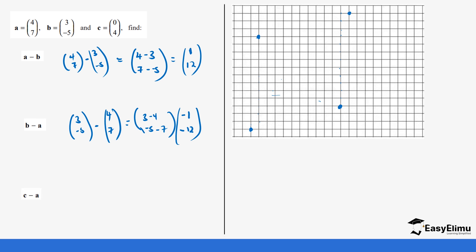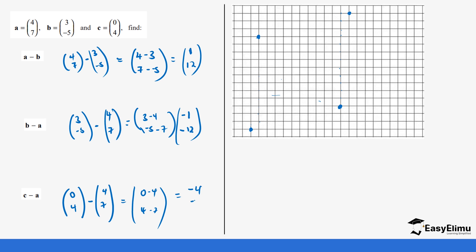Finally, we have c minus a. Our c equals (0, 4) and our a is (4, 7). Doing the subtraction gives us zero minus four, and four minus seven. Zero minus four is minus four, and four minus seven is minus three. So we are moving four units on the x-axis in the negative direction and three units on the y-axis also in the negative direction.